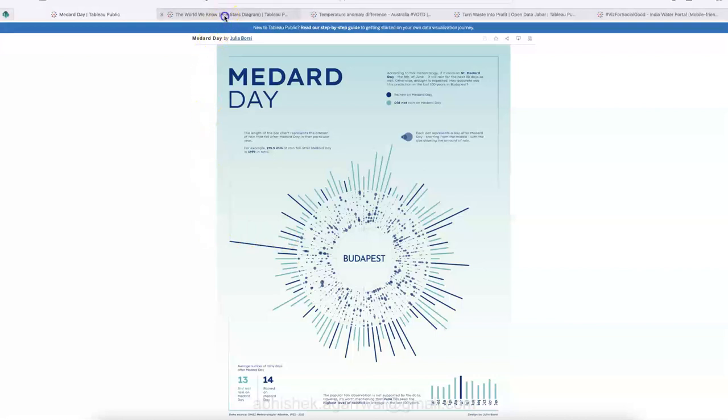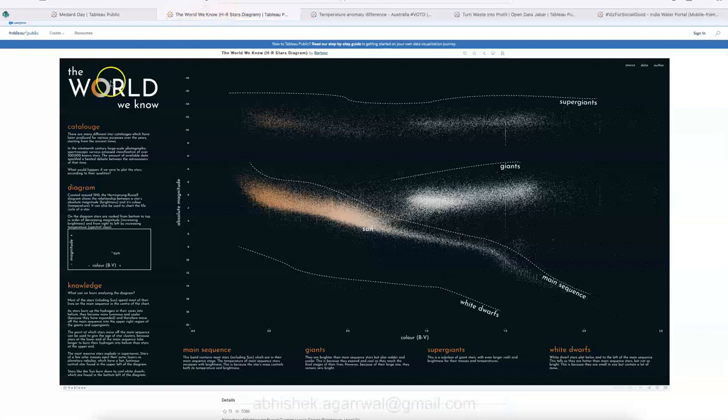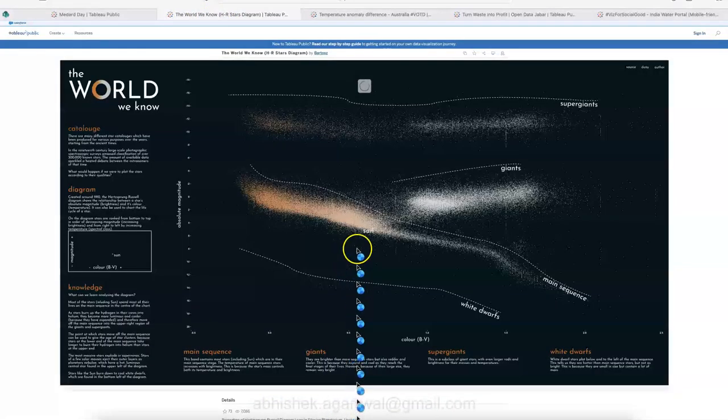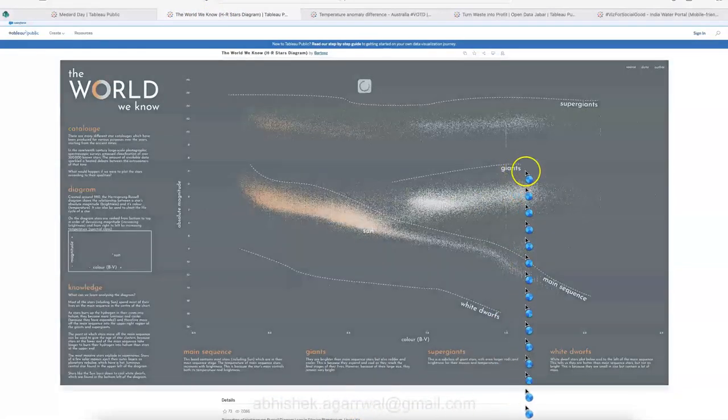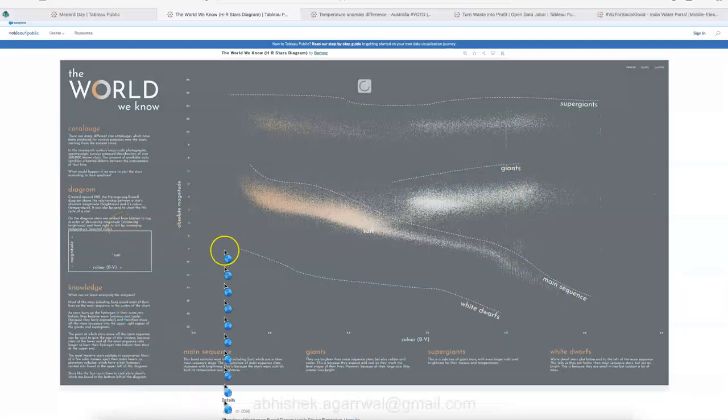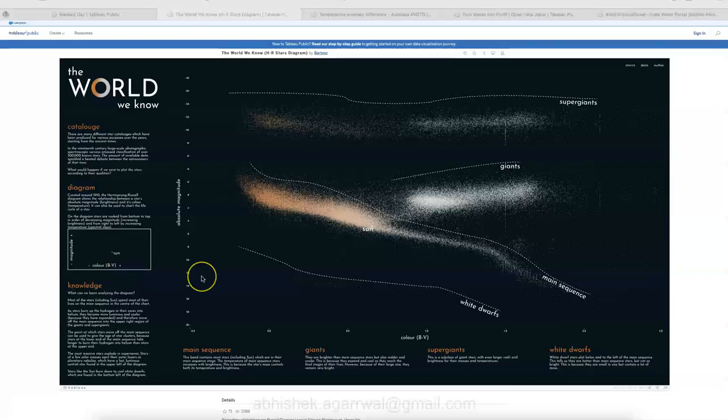Let me move on to the next visualization, which is the world we know. And this is about our ecosystem like the sky, you have giants, you have sun and main sequence dwarf. So while it is refreshing, let me just take a minute. It took another five seconds. So that's why I paused it.